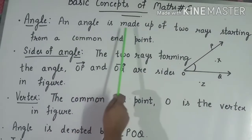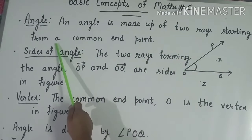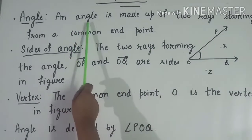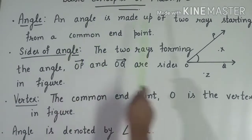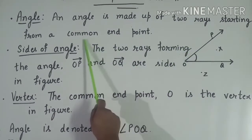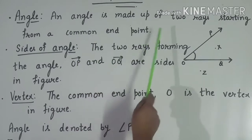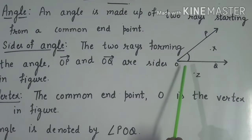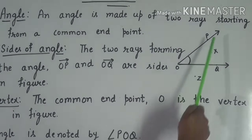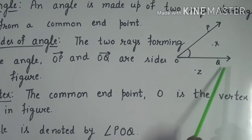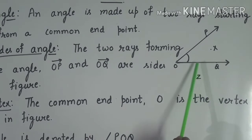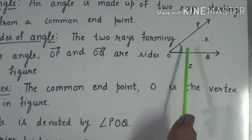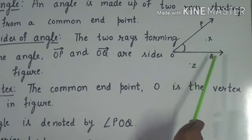An angle is made up of two rays starting from a common end point. As you can see in this figure, OP and OQ are the two rays which start from a common point O. So, the angle is made up of two rays OP and OQ.